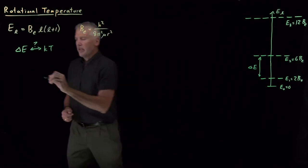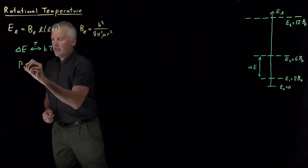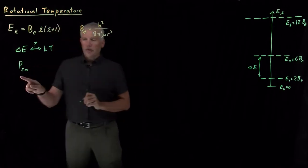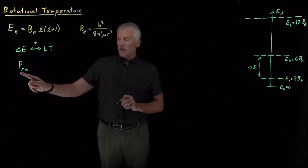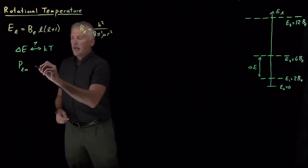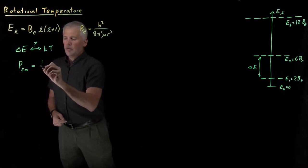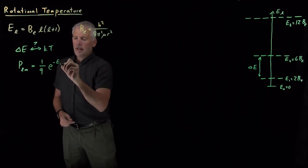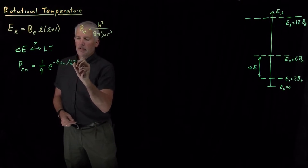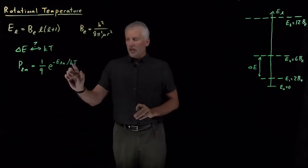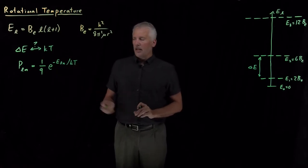Boltzmann tells us the probability of occupying some state — the quantum number LM state — is one over a partition function times e to the minus energy of that state over kT. So it's the ratio between these energies and kT that is important.